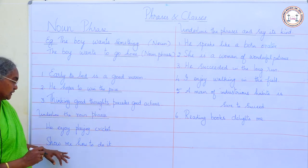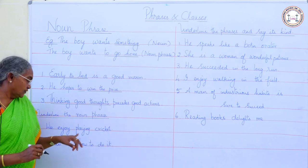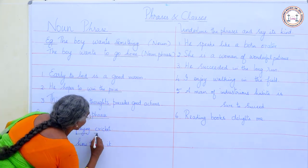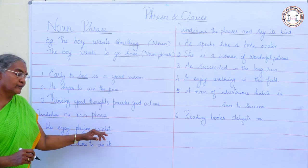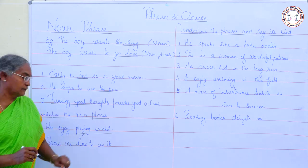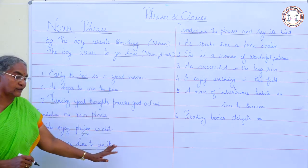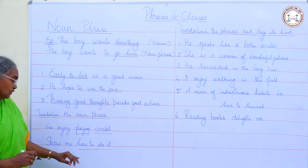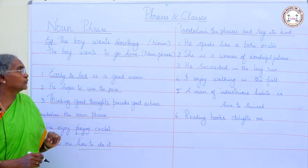Now I shall give you some sentences — underline the noun phrase. 'We enjoy playing cricket.' What is the noun phrase here? 'Playing cricket' — it is the object of the verb 'enjoy,' so this is the noun phrase, a group of words doing the function of a noun. Next: 'Show me how to do it.' 'How to do it' is the noun phrase — the group of words functioning as a noun, and it is the object of the verb 'show.'